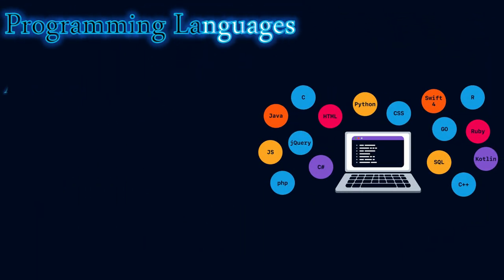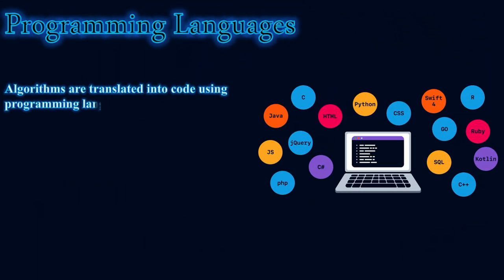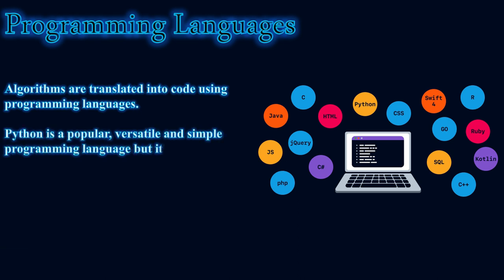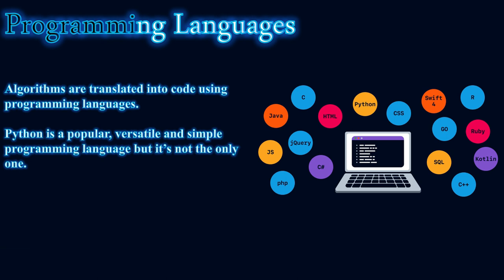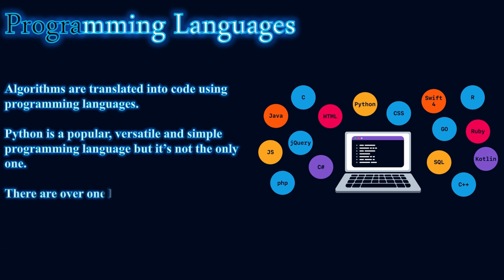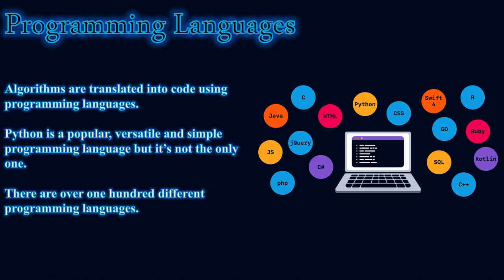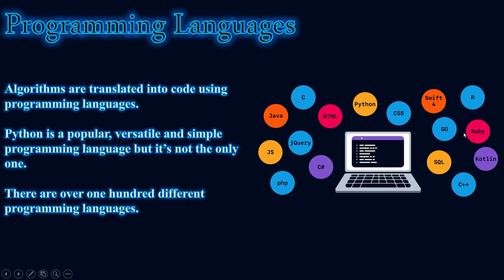Algorithms are translated into code using programming languages. Python is a popular, versatile, and simple programming language, but it's not the only one. There are over 100 different programming languages, including PHP, C#, JavaScript, jQuery, Java, C, HTML, Python, CSS, Go, SQL, C++, Kotlin, Ruby, and many others.